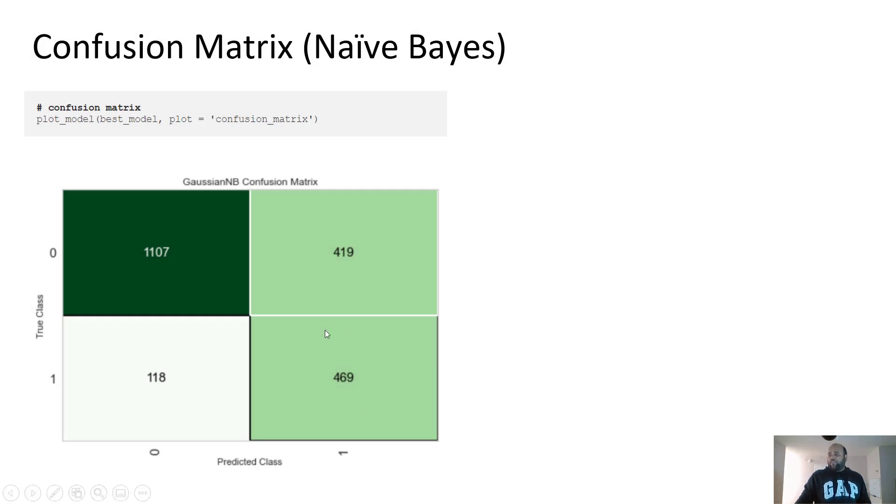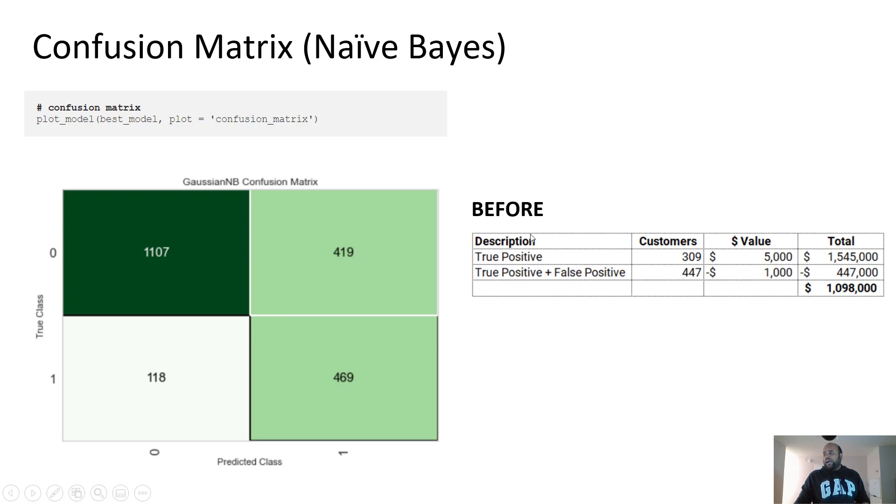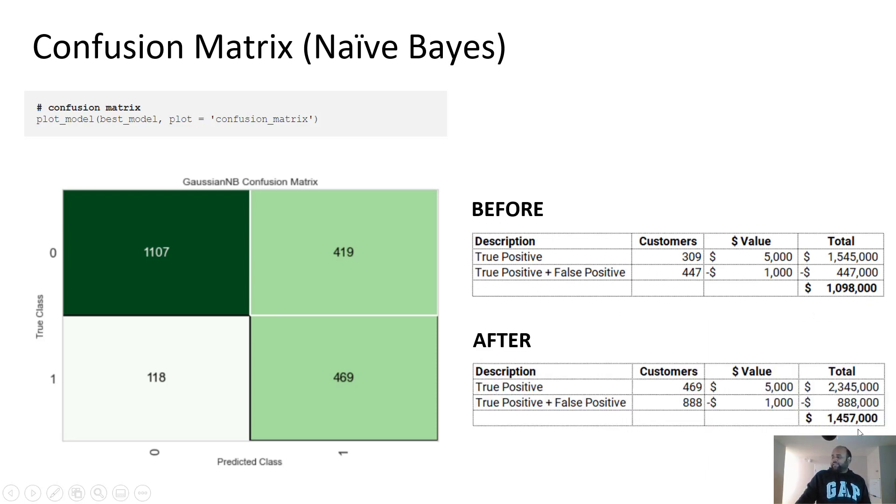This is the new confusion matrix. Obviously, when you sum this, the numbers are still 2000. But the proportion between true positive, false positive and false negative has changed. So this was before 1.1 million. And this is after, so using naive Bayes, we are now making approximately 1.45 million over 2000 customers.